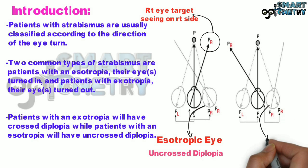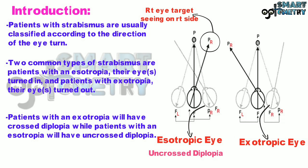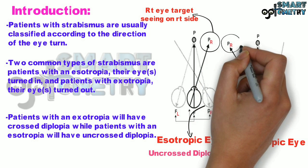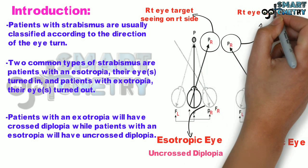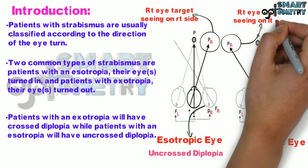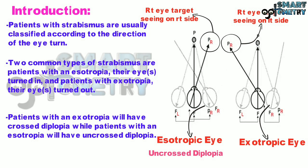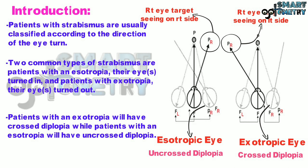In the second diagram alongside, you can see the exotropic eye where the image of the target is seen on the other side compared to the misaligned eye — the right eye target is seen on the left side. This is called crossed diplopia.